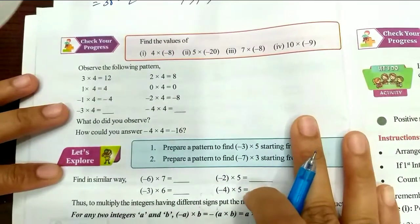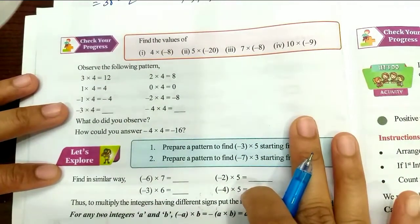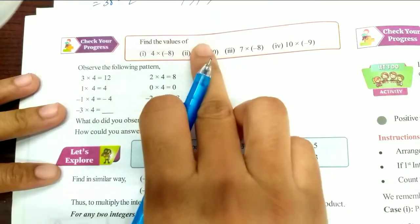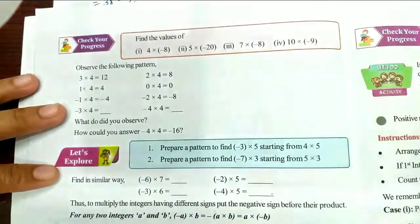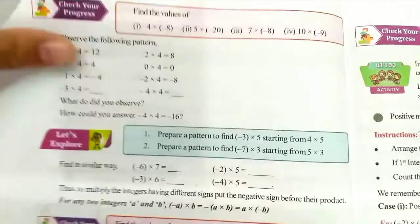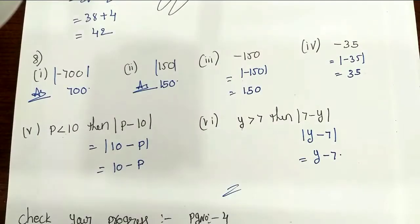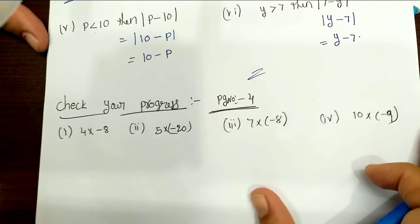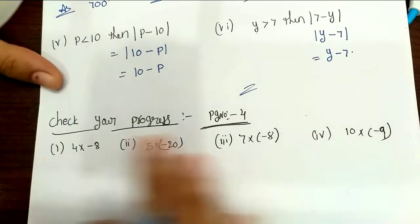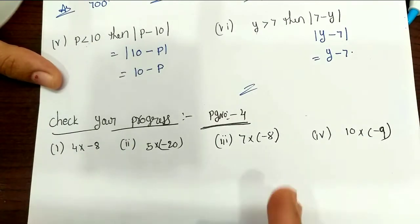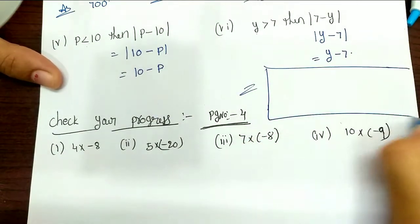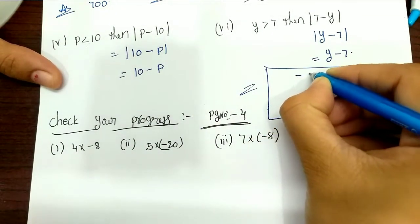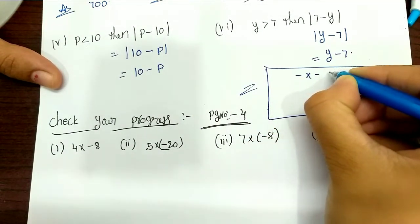Check your progress. This is page number 4. Find the value of — I will multiply these 4 numbers. I already explained the exercises; I will recall the same thing. Two same symbols multiply gives plus.